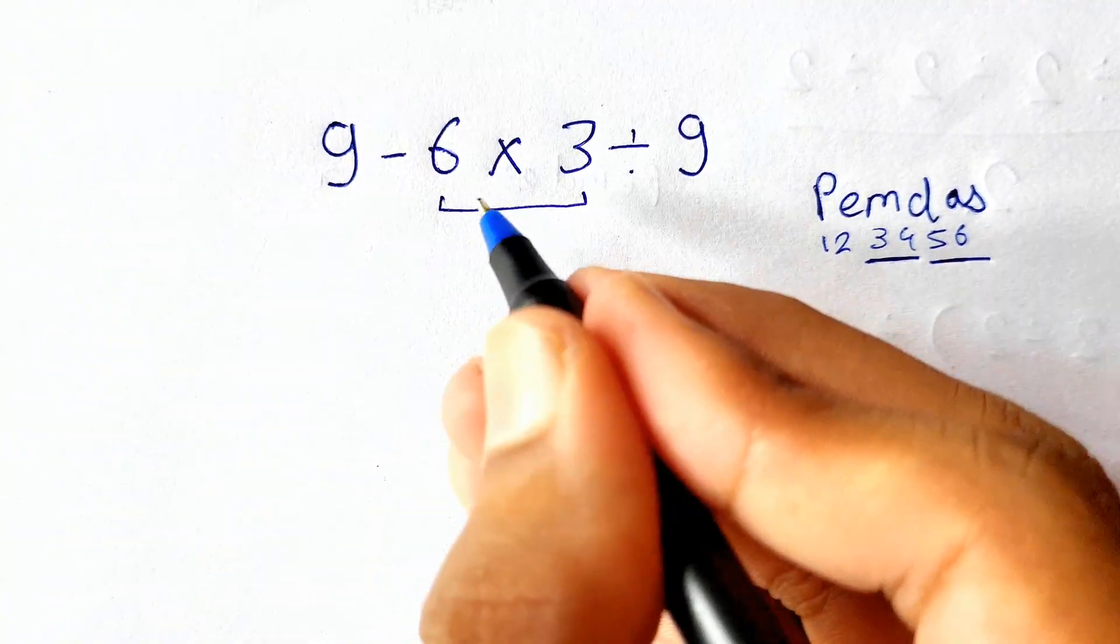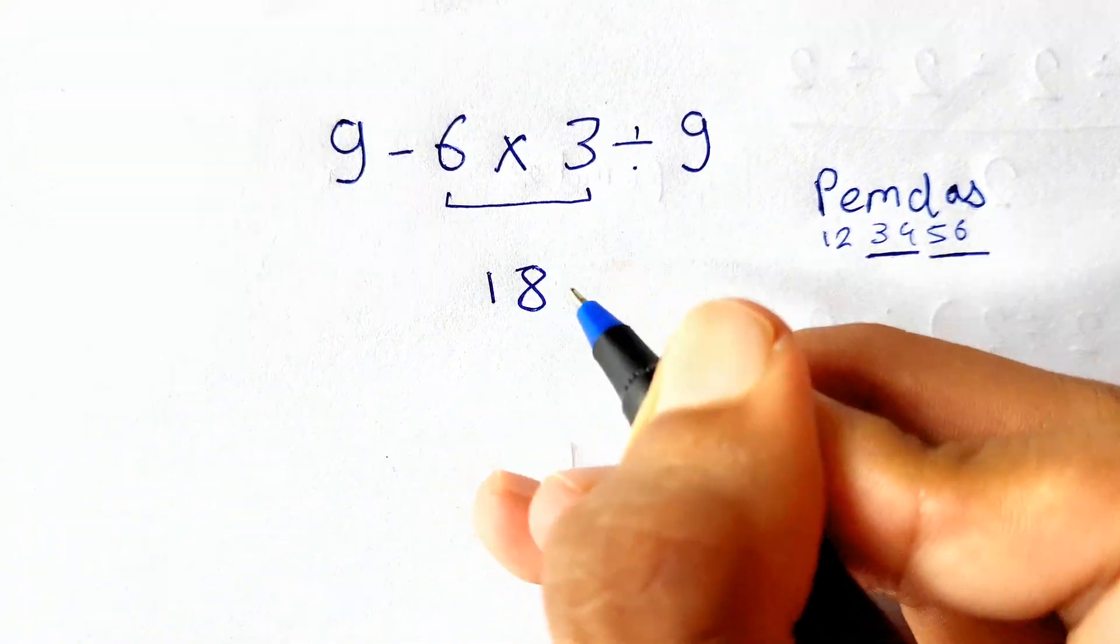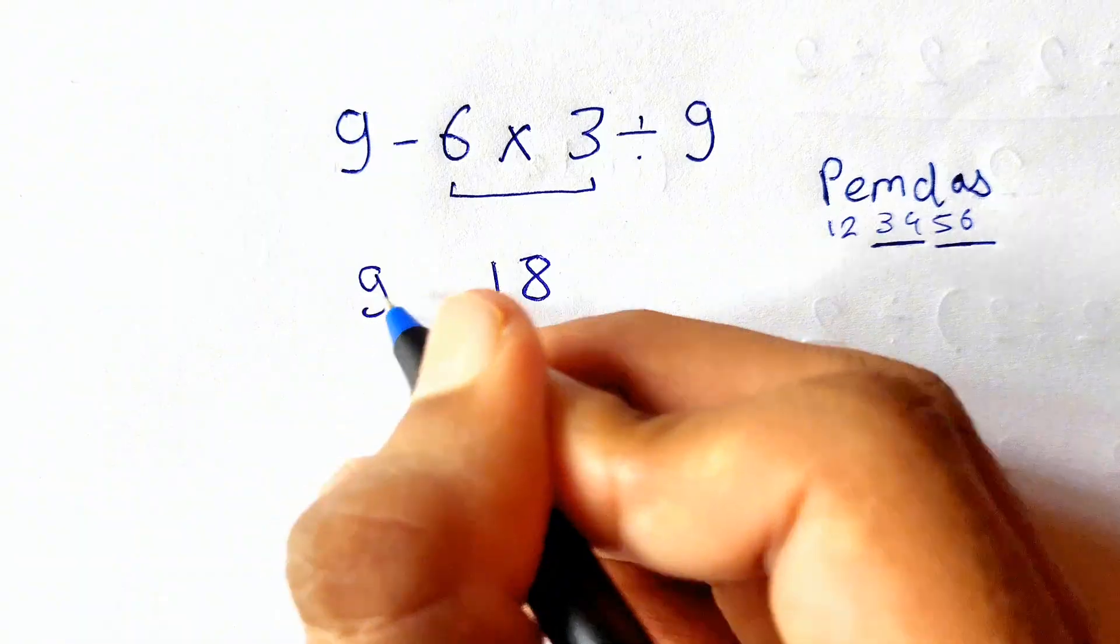solve the multiplication first. That is 6 times 3 gives us 18. Now we rewrite: 9 minus 18 divided by 9.